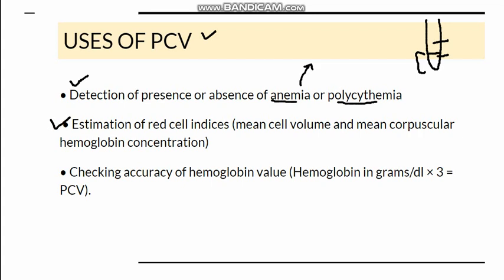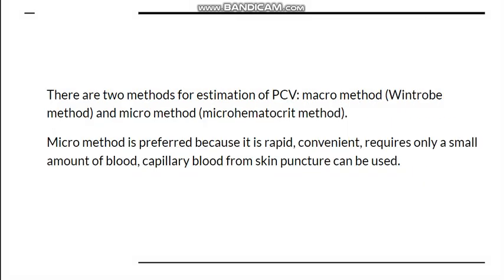Secondly, PCV is useful in the estimation of red blood cell indices. For calculation of MCV and MCHC we need the PCV. Additionally, we can use PCV to recheck the accuracy of the hemoglobin value. If you multiply hemoglobin by three, you get the PCV, so from a known PCV we can estimate what the patient's hemoglobin should be.